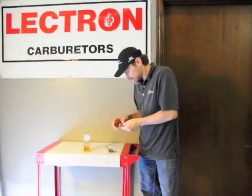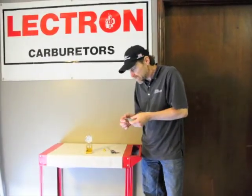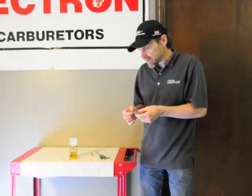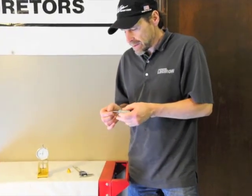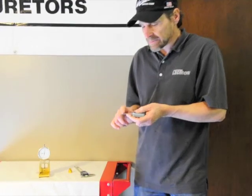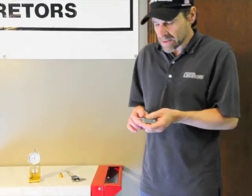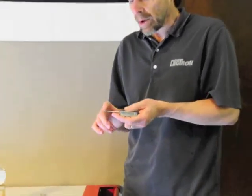We'll first start out here and explain a little bit about how the Electron works. There's no jets at all, and it uses a single metering device, which is a metering rod, and it's precisionally ground from idle all the way to the top end.